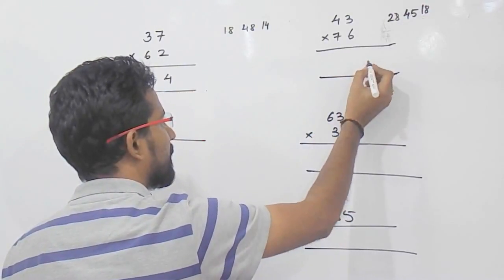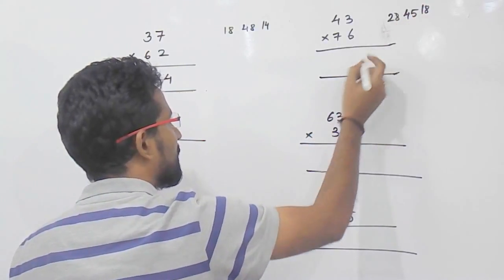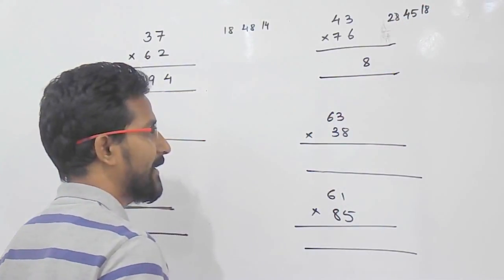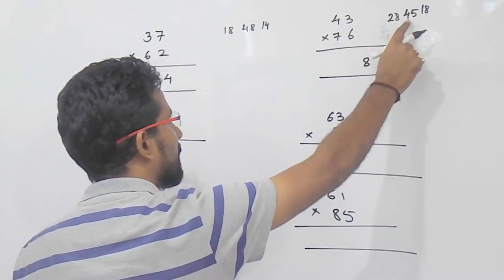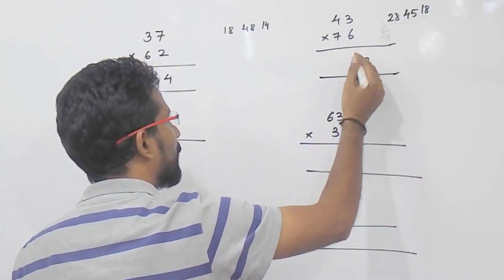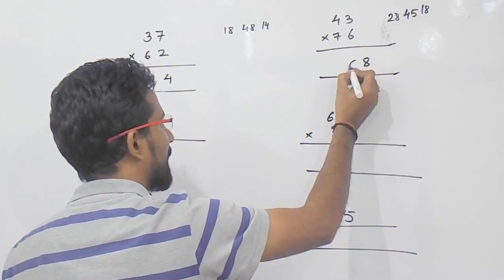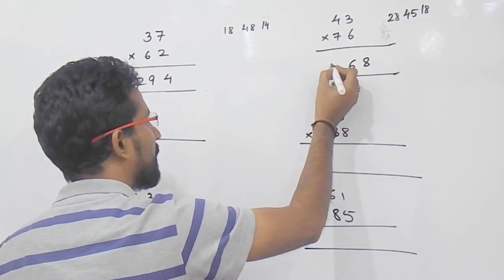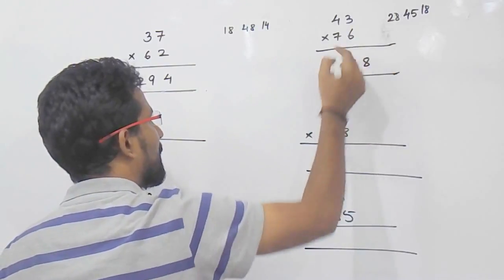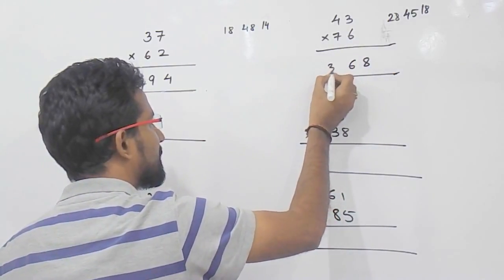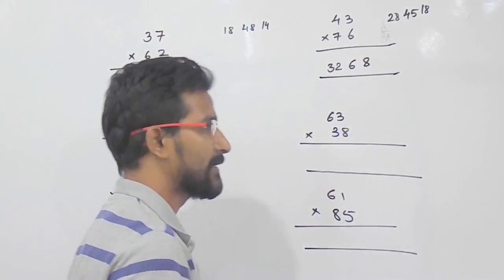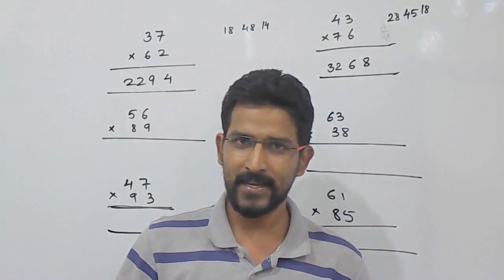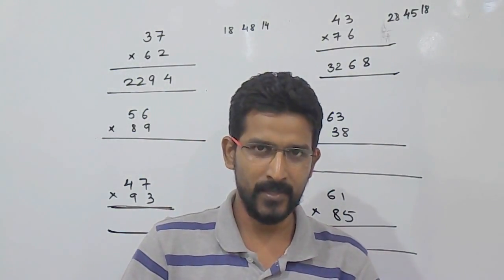Write the unit place value that is 8. 1 will be carried forwarded. So, 1 will be carried forwarded, it will become 46. So, write 6, 4 will be carried forwarded. So, it will become 4 plus 28 that is 32. So, the answer will be 3268.